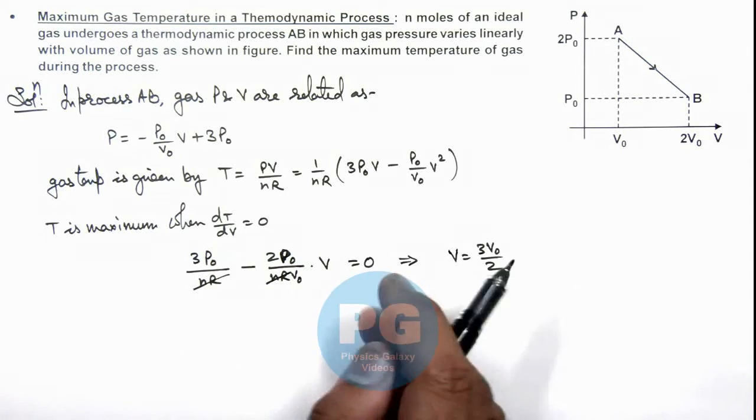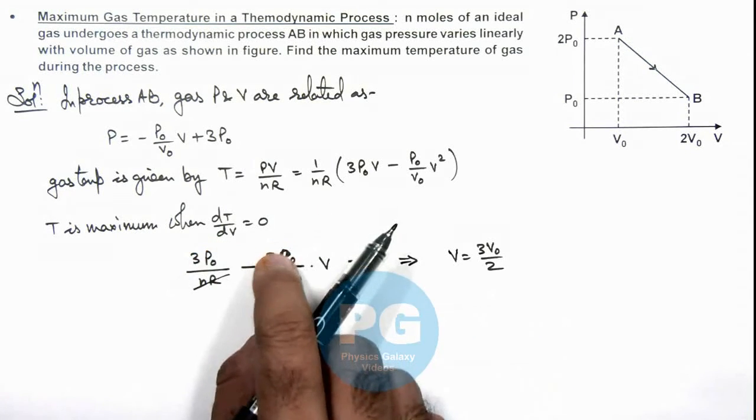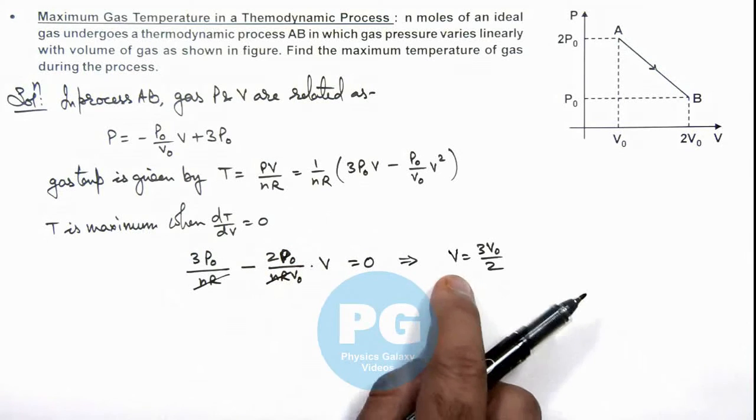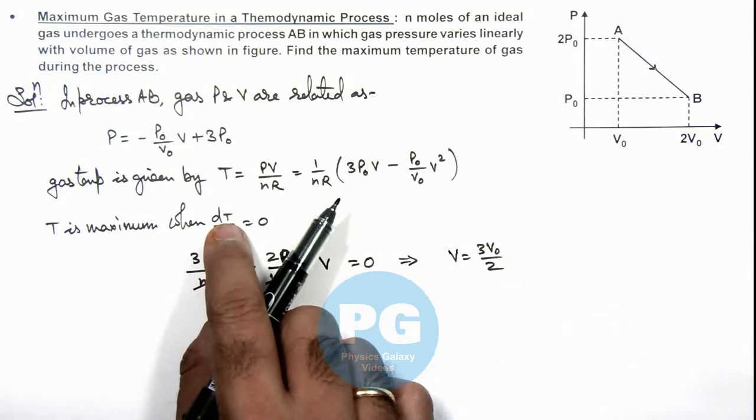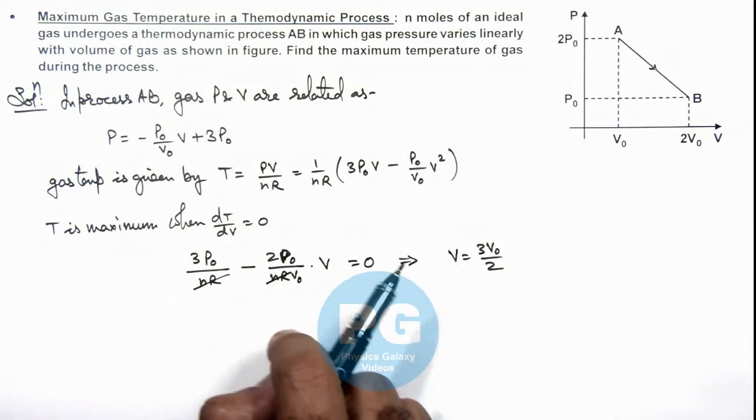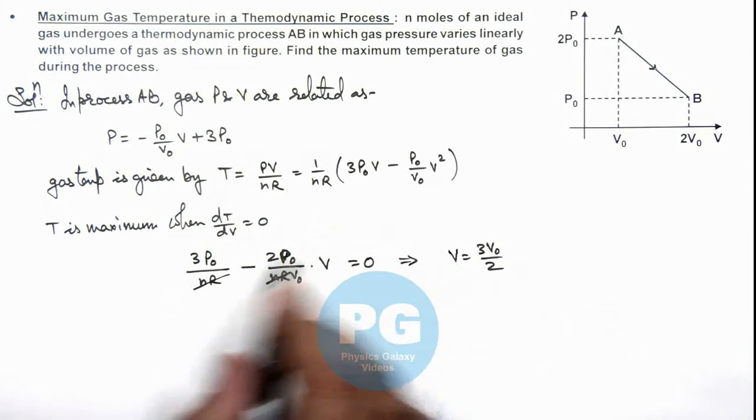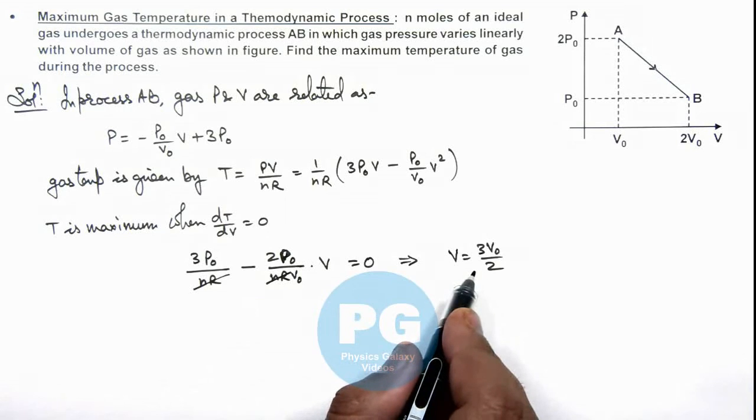You can verify by second derivative check that at V equals 3V₀/2, the second derivative of T with respect to V will come out to be negative, which shows that at this volume temperature is maximum.